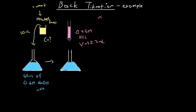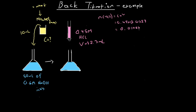From the titer we can work out the moles of hydrochloric acid that reacted. Using standard concentration calculations, moles equals C times V — 0.45 times 0.0323 (converting 32.3 mL to litres). So the moles of hydrochloric acid equals 0.014535. We'll write out all the decimal places to ensure we don't have any rounding errors later in the question.